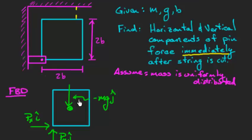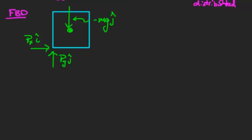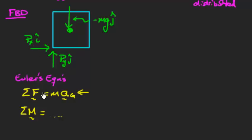Before drawing the mass acceleration diagram, let's think about the physical principles. Since the plate is a rigid body, I'll use Euler's equations: the sum of external forces equals mass times the acceleration of the center of mass, and there's also a moment equation. If I can find the acceleration of the center of mass, then I can find the forces PX and PY.